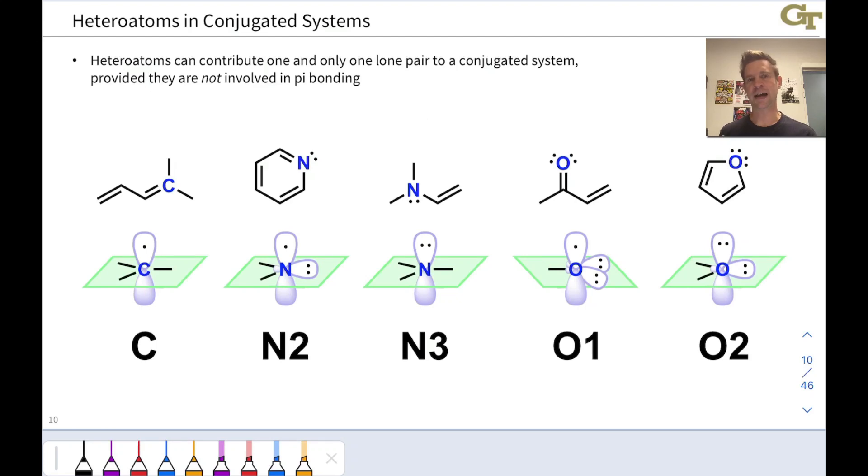This slide outlines the types of atoms that we find in conjugated systems, including both carbons and heteroatoms. Heteroatoms can contribute one and only one lone pair to a conjugated system, provided that heteroatom is not already involved in pi bonding.